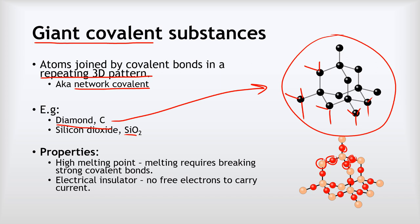Now in terms of their properties, these have very high melting points because to melt them we've got to break these strong covalent bonds rather than the weak intermolecular forces that we saw on the last slide, and that takes a lot of energy. They are also electrical insulators because there are no electrons that are free to carry that current.